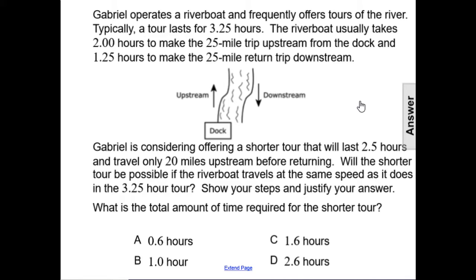Gabriel is considering offering a shorter tour that will last 2.5 hours and travel only 20 miles upstream before returning. Will the shorter tour be possible if the riverboat travels at the same speed as it does in the 3.25-hour tour? In order to answer this question, we need to know what is the total amount of time required for the shorter tour.